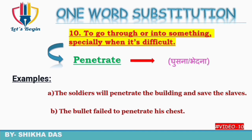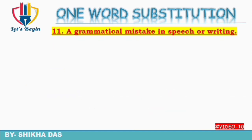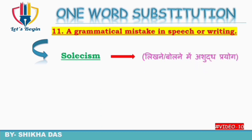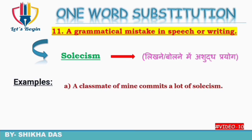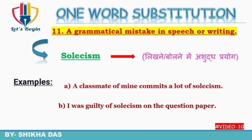Question number 11: a grammatical mistake in speech or writing — bolne mein ya likhne mein grammatical mistake kar jana. Isko kehte hain 'solecism'. Solecism ko Hindi mein kehte hain 'likhne ya bolne mein ashuddh prayog'. Examples: 'A classmate of mine commits a lot of solecisms.' 'I was guilty of solecism on the question paper' — matlab question paper par grammatical mistake karne ki guilty thi.